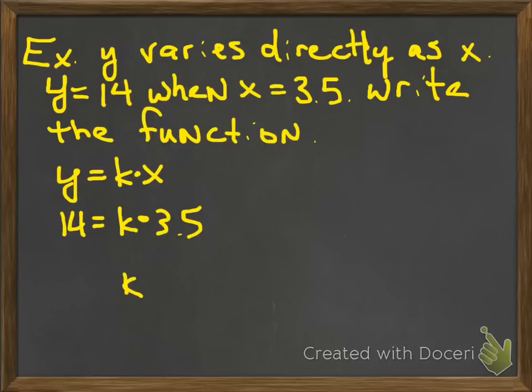And then you're saying, how do I solve for k? Well, how do you get rid of multiplication? You just divide. So 14 divided by 3.5 would be 4. So now my new function, put the 4 in place of the k, and say y is equal to 4 times x. And there you go, you've answered the question, you wrote the function.